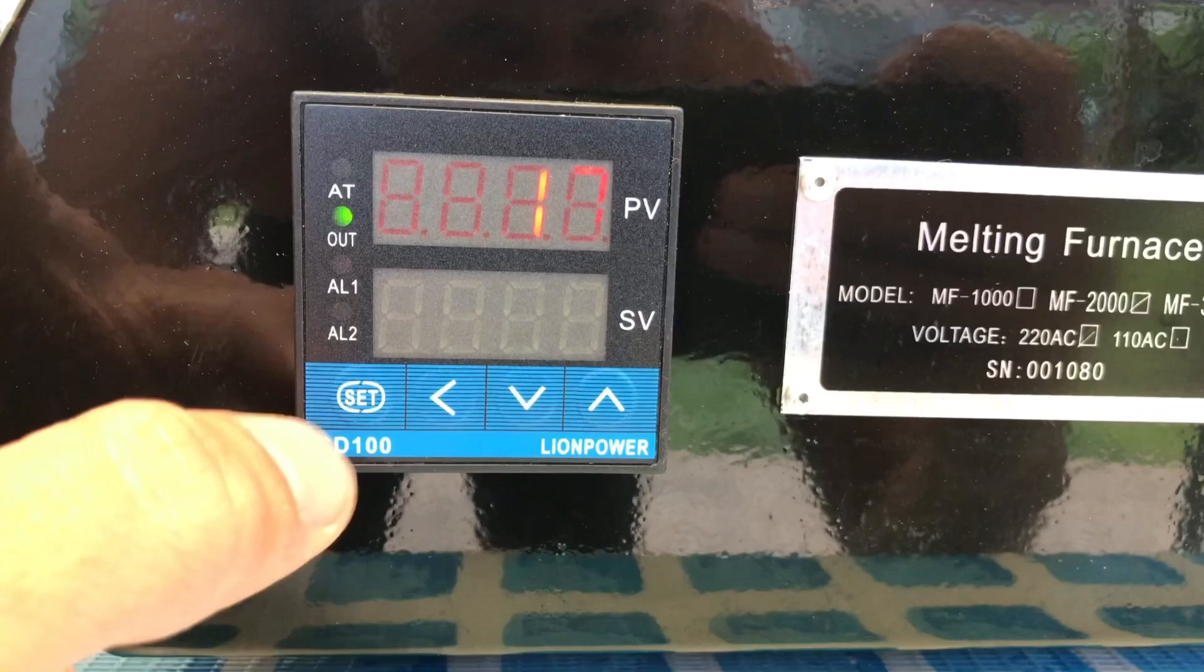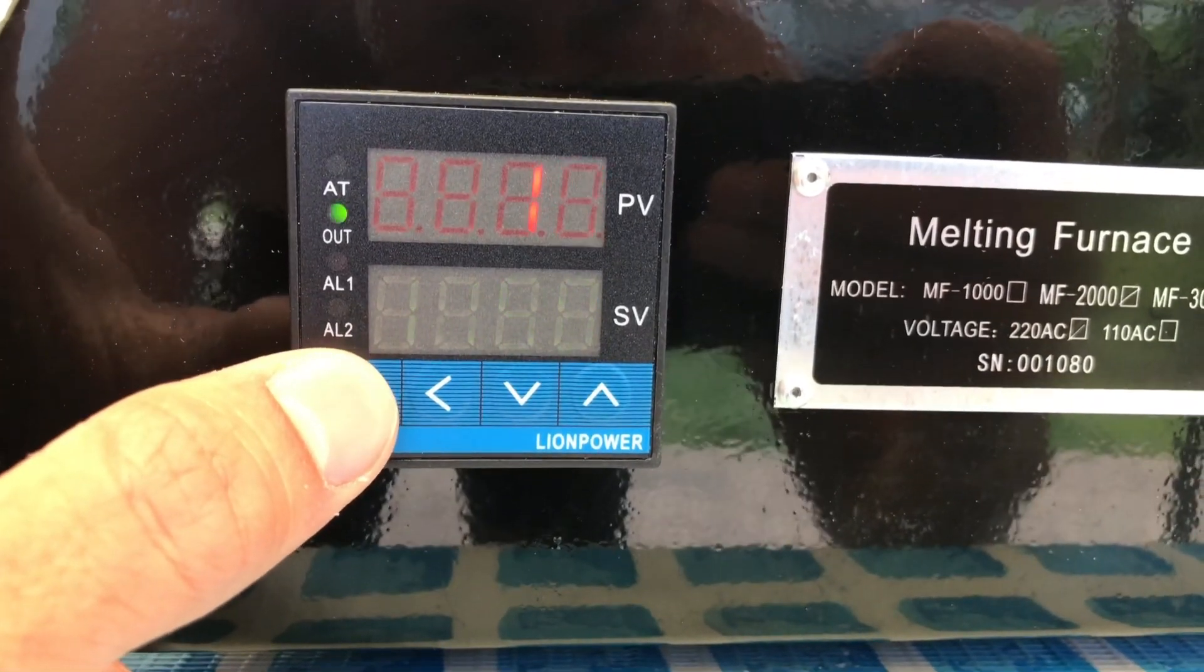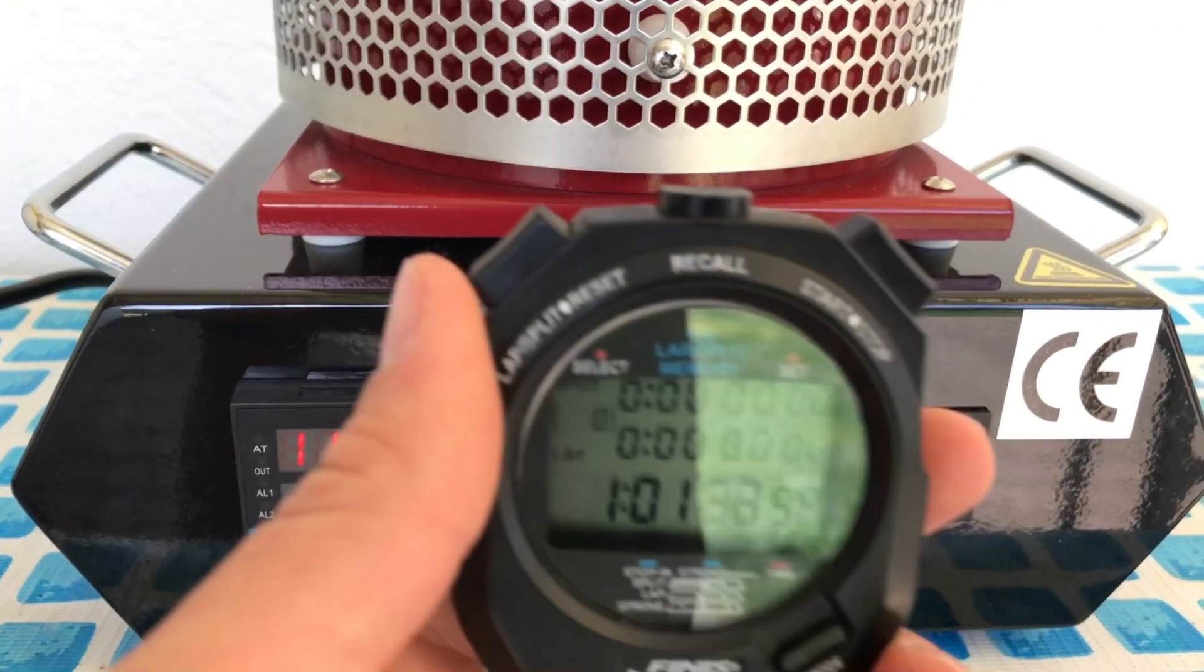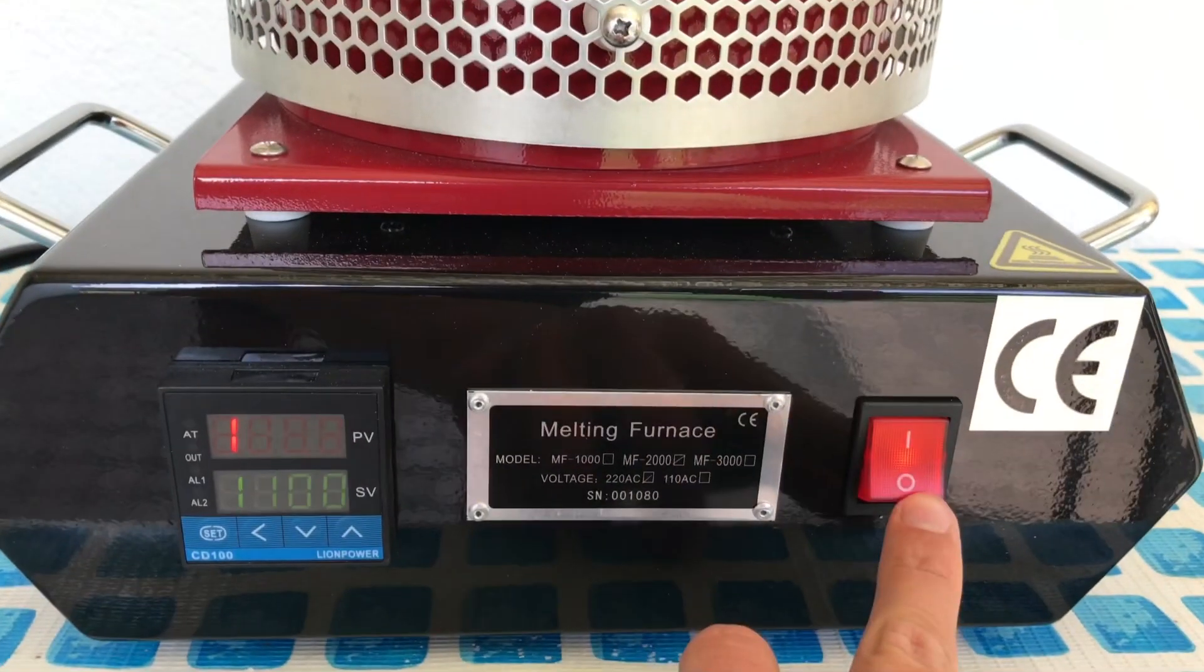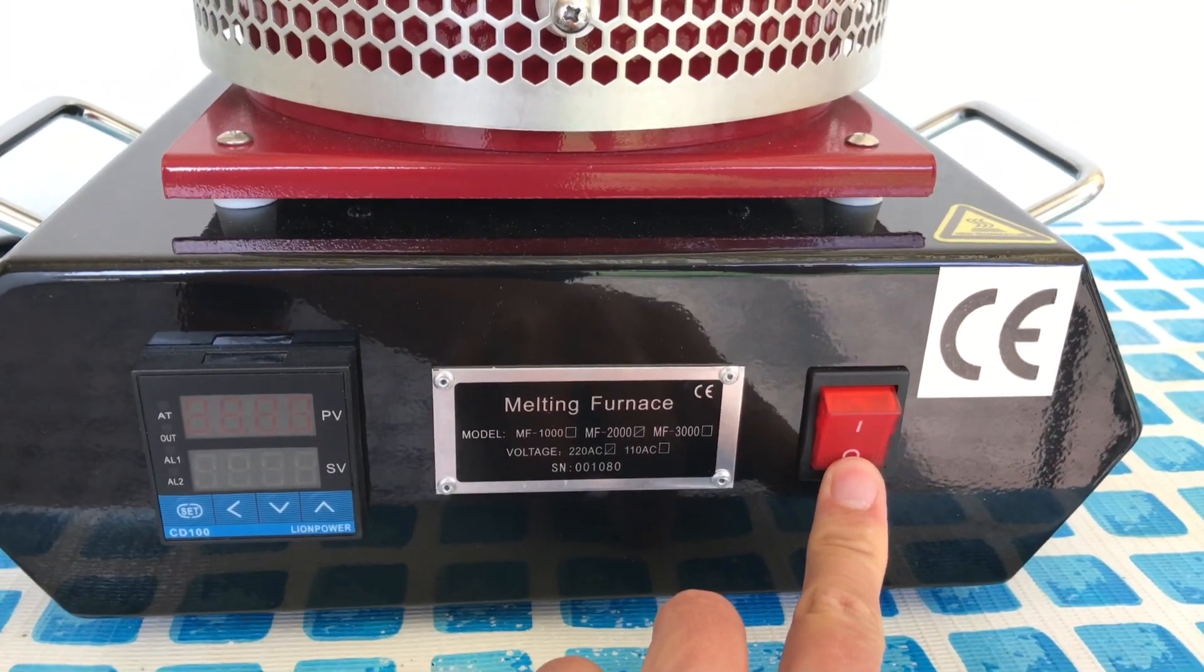Calcium melts at 842 degrees Celsius, therefore the temperature must be kept way higher than that. Once the temperature reached 900 degrees C, a stopwatch was started to let the reaction go for about an hour.